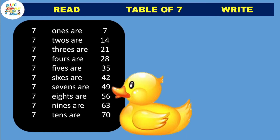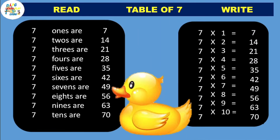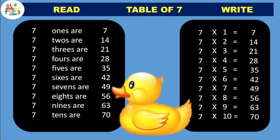Once more. 7 one's are 7, 7 two's are 14, 7 three's are 21, 7 four's are 28, 7 five's are 35, 7 six's are 42, 7 seven's are 49, 7 eight's are 56, 7 nine's are 63, 7 ten's are 70.